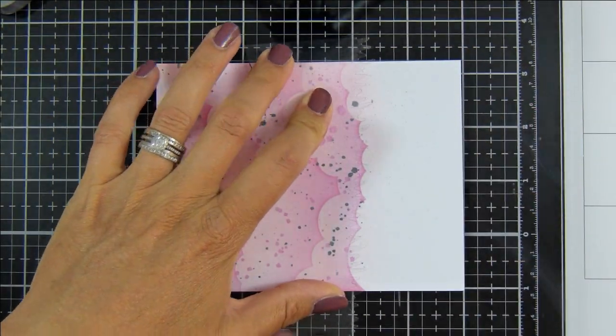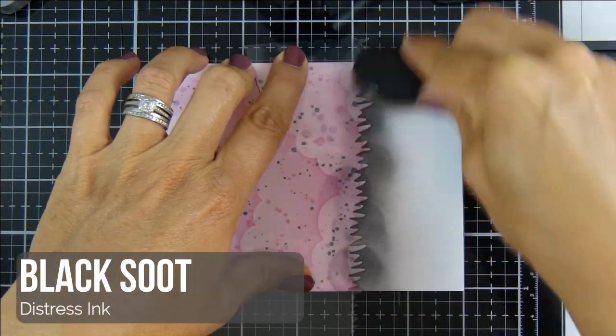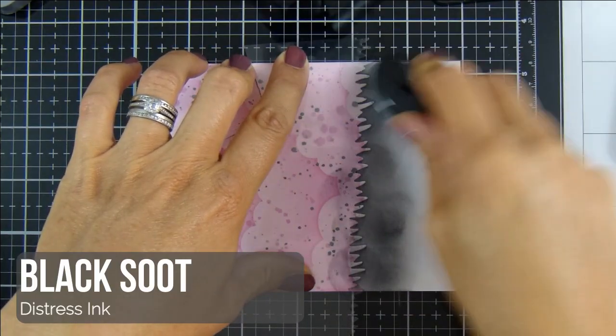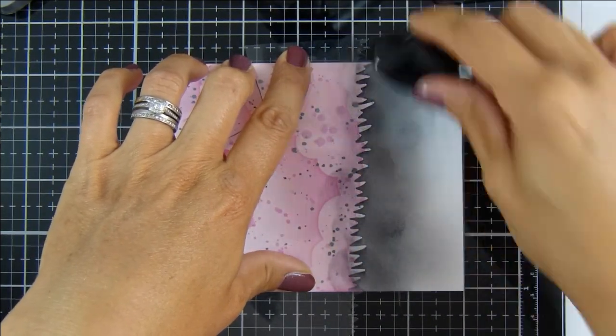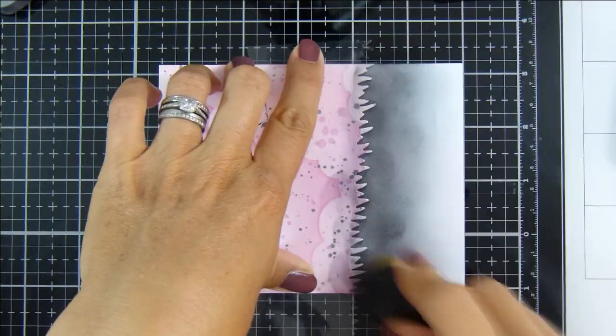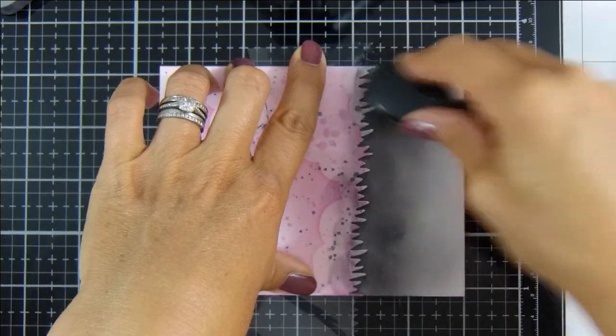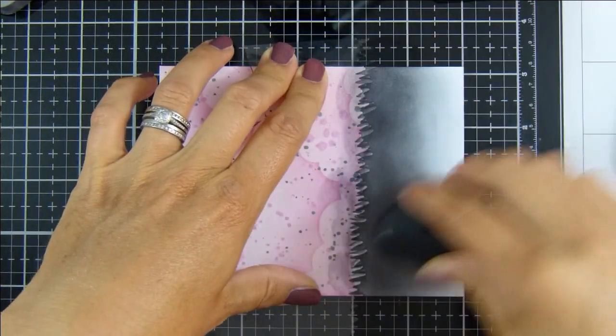I've made myself a grassy stencil here with a piece of acetate and a grassy border die, and I'm using my black soot distress ink to blend on my ground. I'm focusing most of the darker color towards the edge of that stencil and fading out for a gradient look.